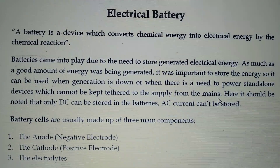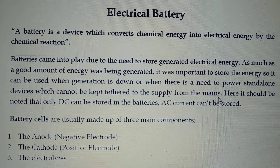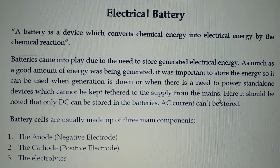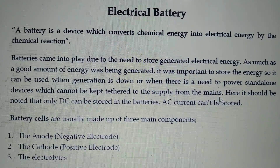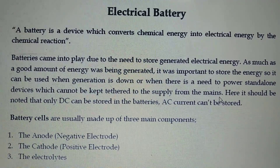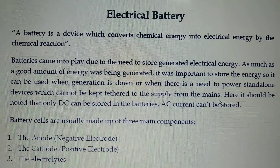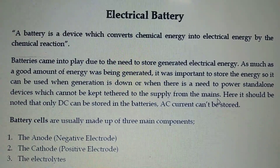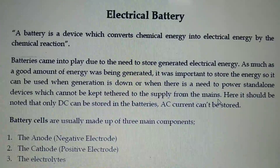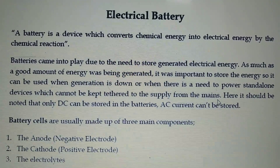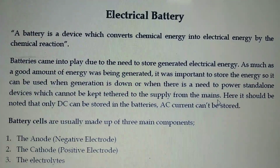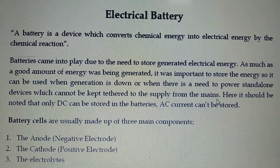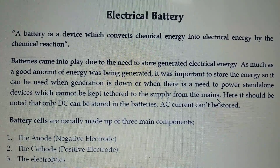Whenever the power supply is not available, applications must run for different areas like industrial applications, domestic applications, and commercial applications, even though the main power supply is not available. For that purpose, the electrical energy must be stored and used when the power is not available. That is why batteries came into society — in batteries we can store electrical energy in the form of DC supply, since AC cannot be stored.